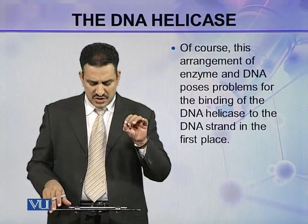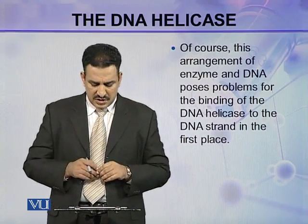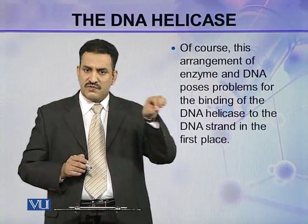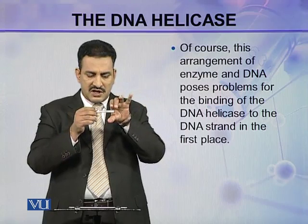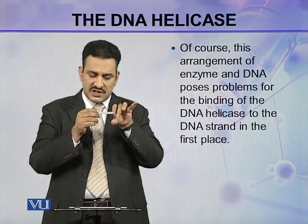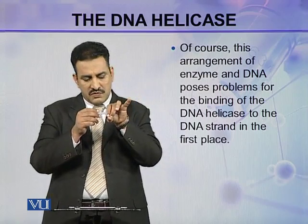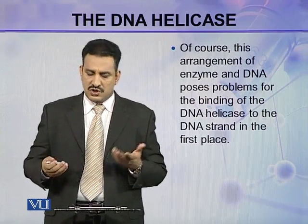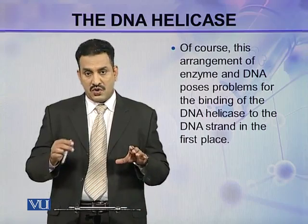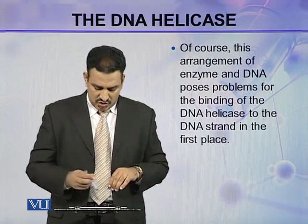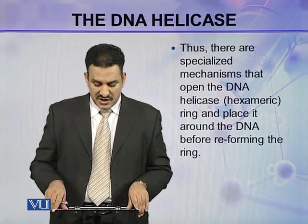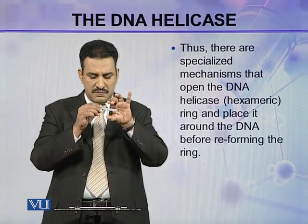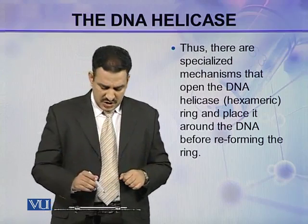This arrangement of the enzyme and DNA poses problems for the initial binding of the DNA helicase to the DNA strand. Because the helicase is in ring form, how does this ring encircle the DNA strand the first time? Once it has encircled the strand, it will keep on moving and leave at the end of replication. There are some specialized mechanisms that open the DNA helicase hexameric ring and place it around the DNA before reforming the ring.